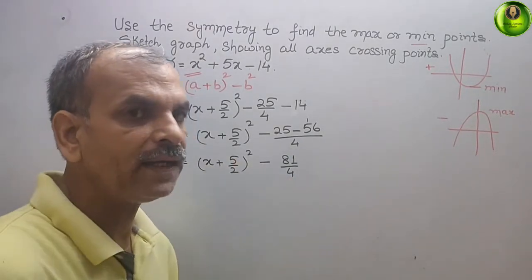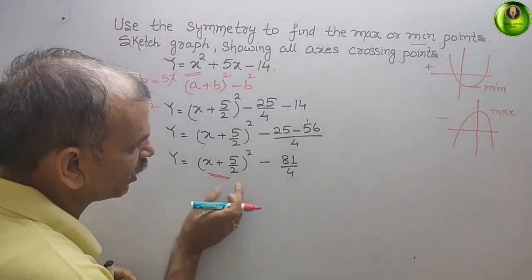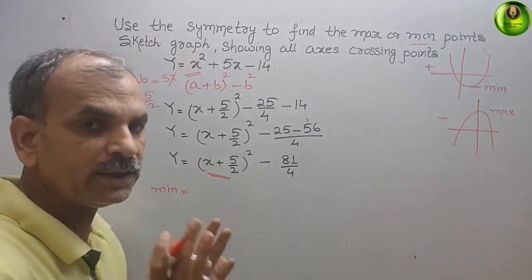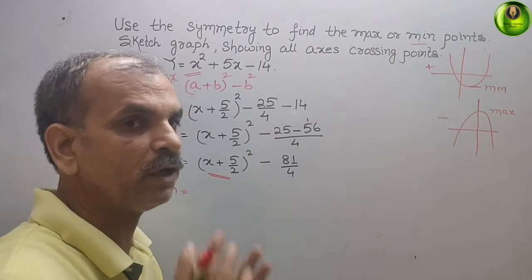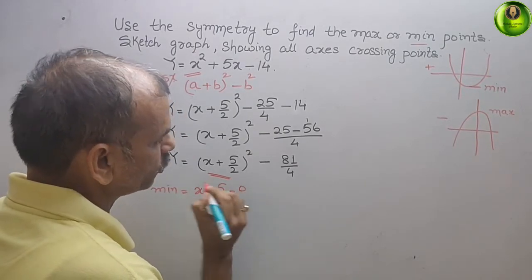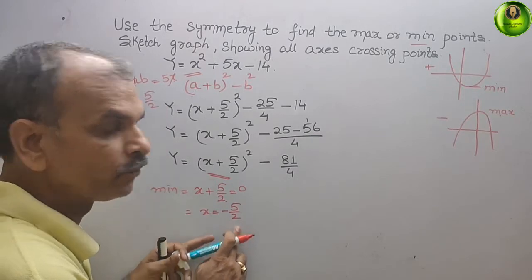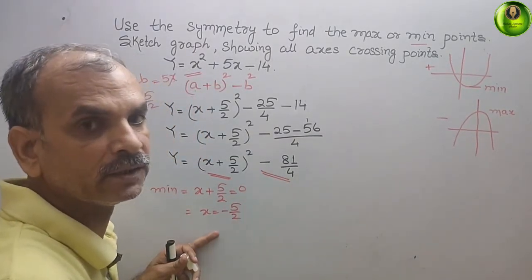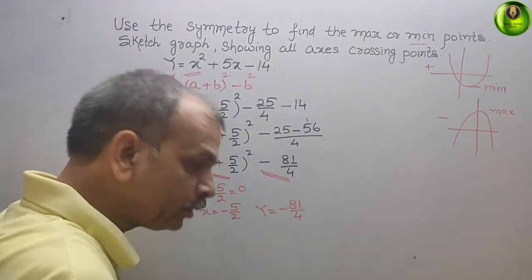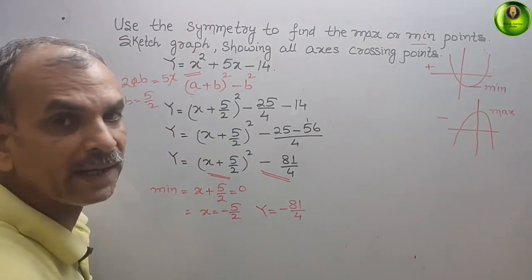Now find the minimum point. The x-coordinate comes from the bracket: set x + 5/2 = 0, so x = -5/2. Whatever is left outside the bracket is your y-coordinate, so y = -81/4. Therefore the coordinates of the minimum point are (-5/2, -81/4).